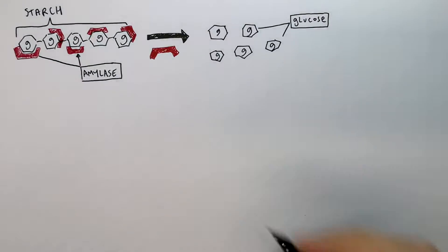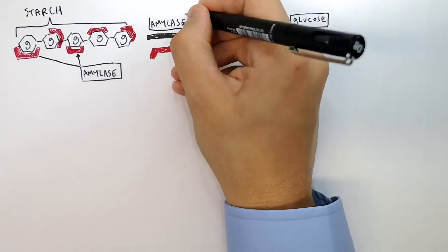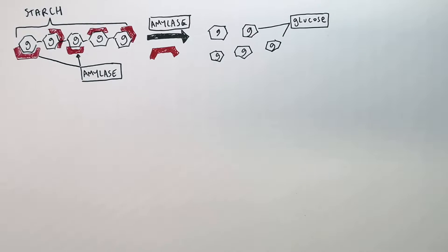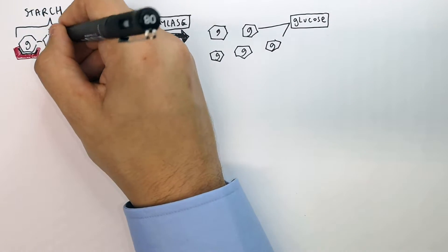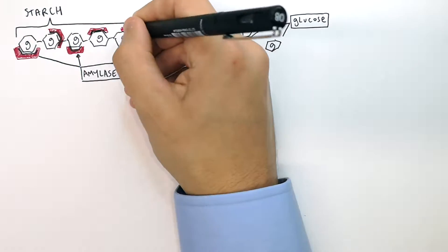Amylase is specific to starch. The active sites of amylase bind the specific substrate starch.